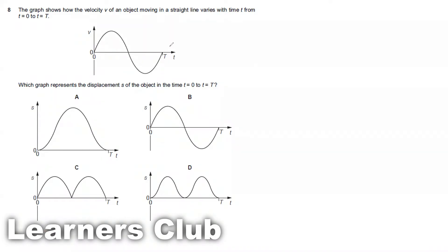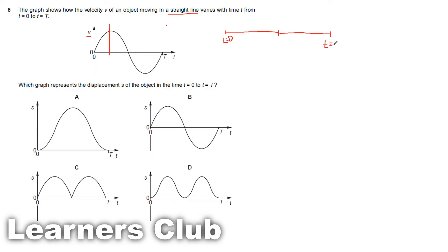The question gives a velocity-time graph. Velocity is a vector quantity with both magnitude and direction. We need to find the corresponding displacement-time graph. The object moves in a straight line, starting with velocity 0 at t equals 0. The velocity slowly increases to a maximum and then decreases back to 0 at t equals T over 2, which is exactly half the total time.